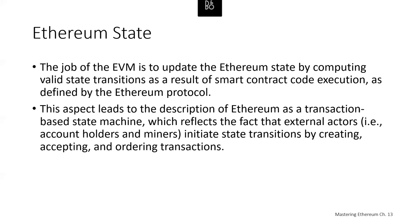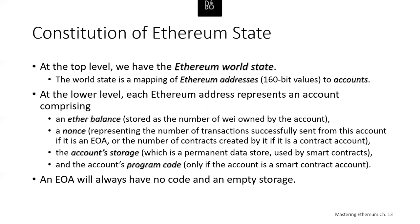So let's think about what Ethereum state is. At the top level, we have the Ethereum world state. The world state is a mapping of Ethereum addresses — the 160-bit values — to accounts. At the lower level, each Ethereum address represents an account comprised of an Ether balance stored as a number of wei owned by the account, and a nonce representing the number of transactions sent from this account if it's a wallet address, or the number of contracts created by it if it's a contract account.